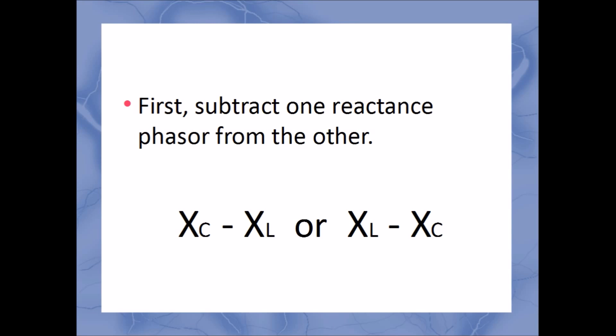First, we can subtract one reactance from the other. This is because the inductor and capacitor have reactances with the opposite phase. They are exactly 180 degrees apart. So, take the smaller one away from the bigger one to get a new vector, the net reactance, if you will.